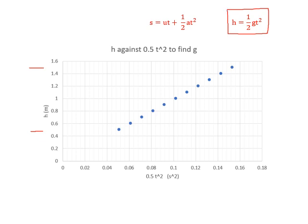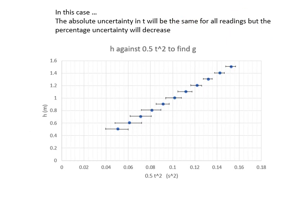Looking at that equation, if I plot h against 1/2 t^2, then my gradient will be g. Because it's y = mx - y is whatever I put on the y-axis which is the height, x is whatever I put on the x-axis which in this case is 1/2 t^2, so my gradient will be m, will be g. So I can get a value of g.